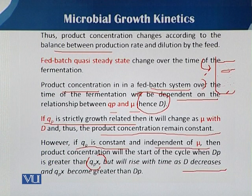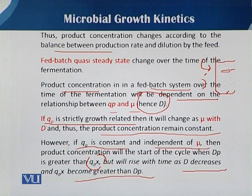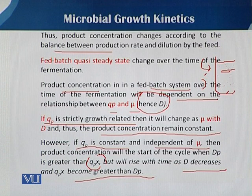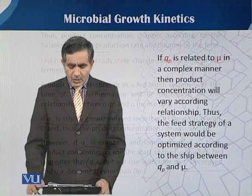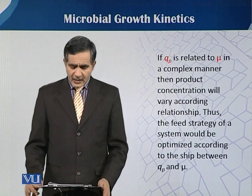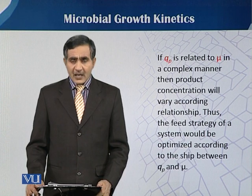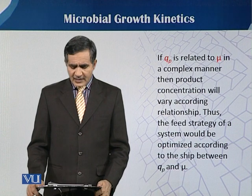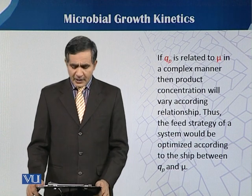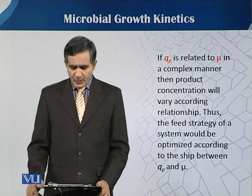Product concentration is directly associated with D. When dilution rate equals the specific growth rate, X remains constant and P also remains constant. If D increases, biomass concentration decreases and product concentration also decreases. If D decreases, X will increase and P will also increase. If Qp is related to mu in a complex manner, then the product concentration will vary according to that relationship, and thus the feed strategy of the system must be optimized according to the relationship between Qp and mu.